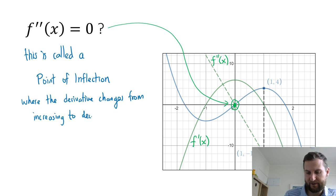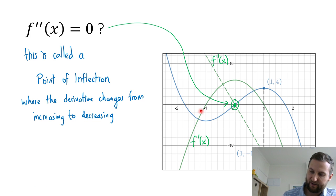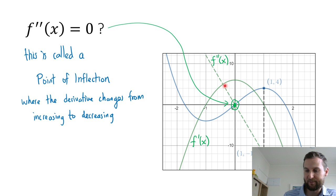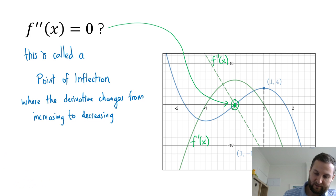Specifically, a point of inflection is where the derivative changes from increasing to decreasing, or vice versa. In this case the derivative — my parabola — is increasing, increasing, then starts to decrease. Between the increase and the decrease, that maps out the point of inflection. It could also be the other way around, where it changes from decreasing to increasing.